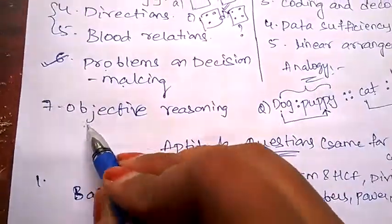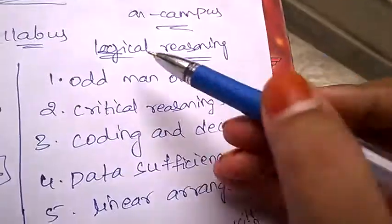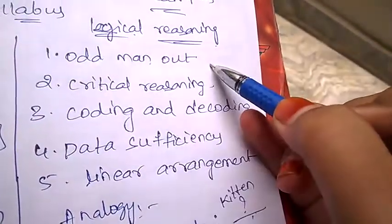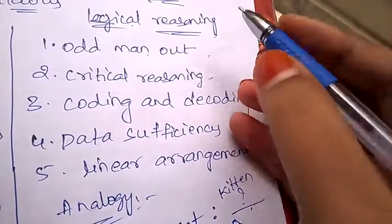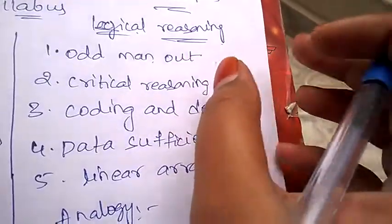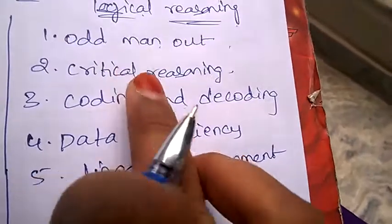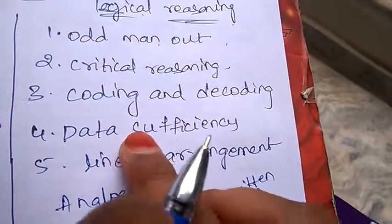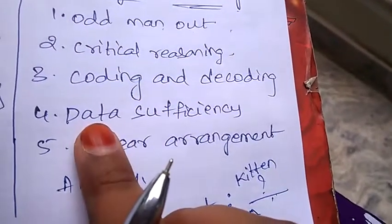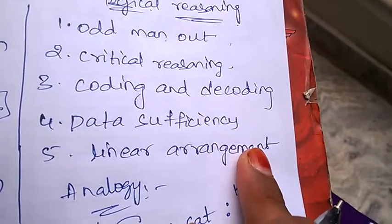Next, objective reasoning will also be asked. Now let's see, under on-campus, the logical reasoning questions syllabus: First is odd man out, where you need to consider the options given and select which is the different one from those options. Then critical reasoning, coding and decoding—I even made a video on coding and decoding, watch that also.